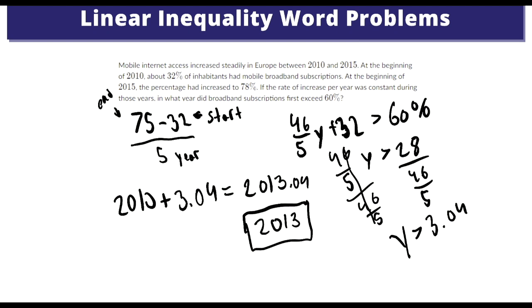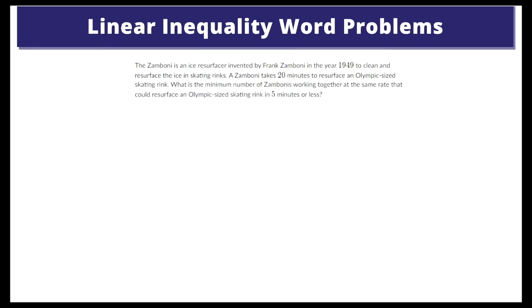On to the last question. The Zamboni is an ice resurfacer invented by Frank Zamboni in the year 1949 to clean and resurface the ice in skating rinks. A Zamboni takes 20 minutes to resurface an Olympic-sized skating rink. What is the minimum number of Zambonis working together at the same rate that could resurface an Olympic-sized skating rink in 5 minutes or less?